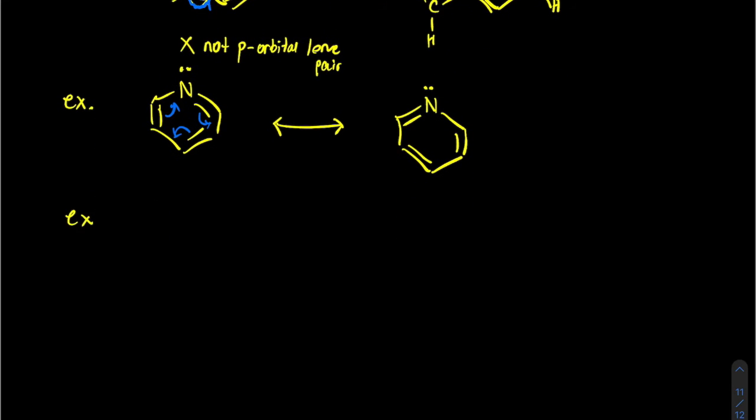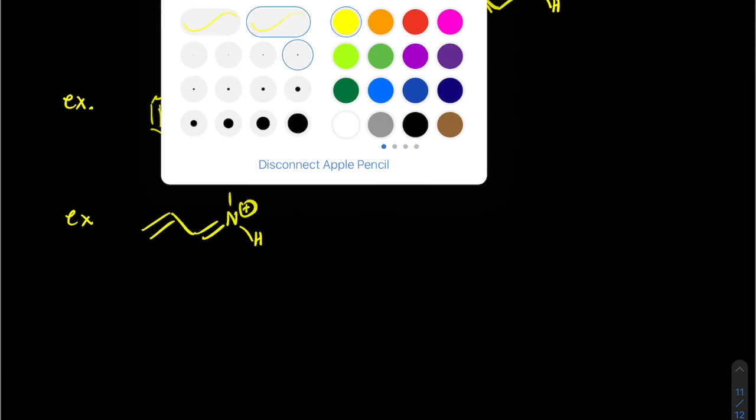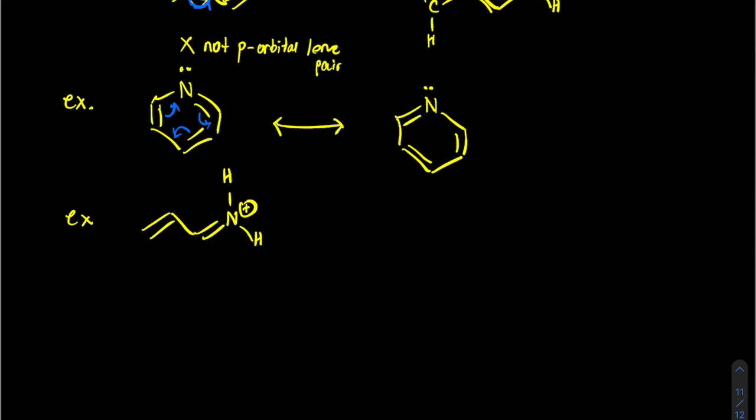If you have a molecule that has an electronegative atom, you again want to ask yourself if you were an electron, where would you want to move, right? So we could move, there's a couple different resonance structures you can draw for this, but let's just do the two like this.